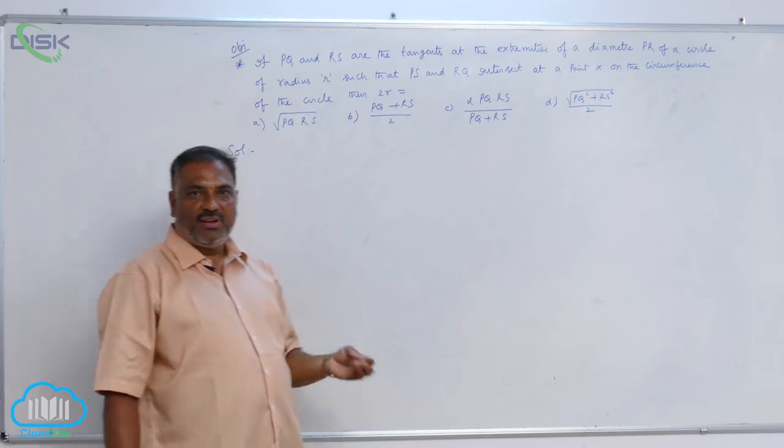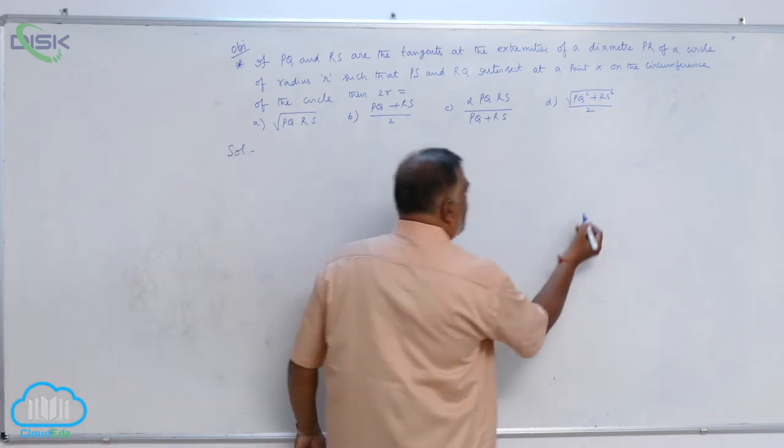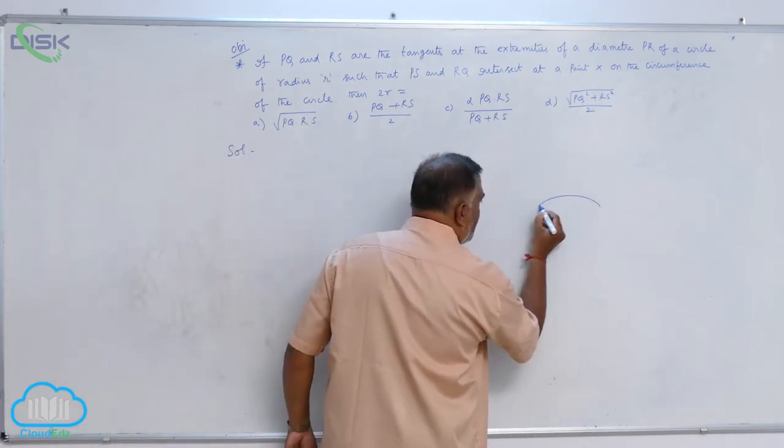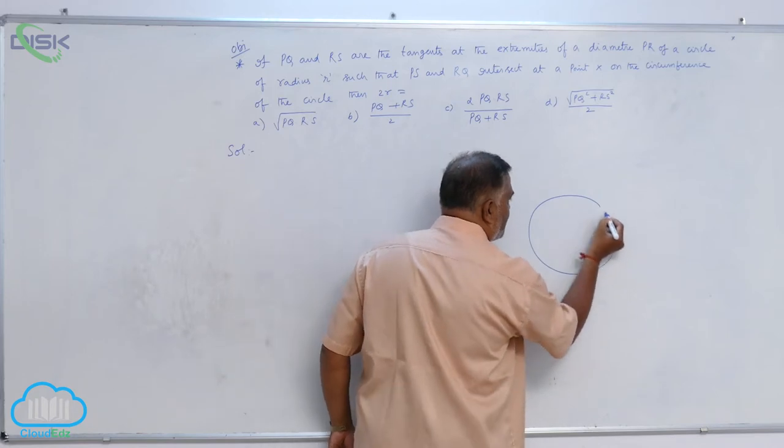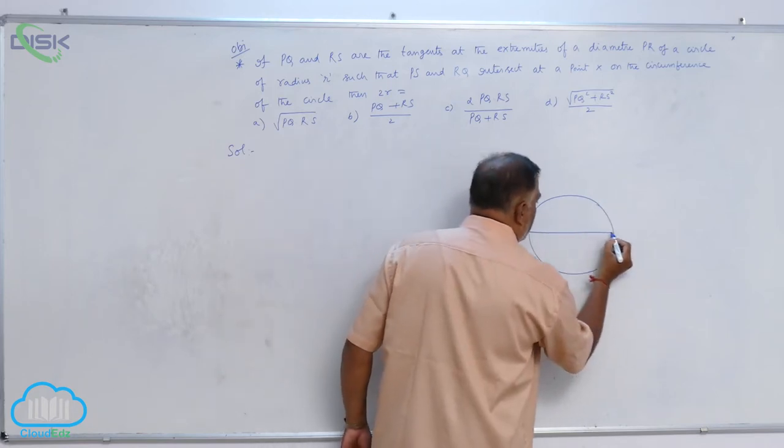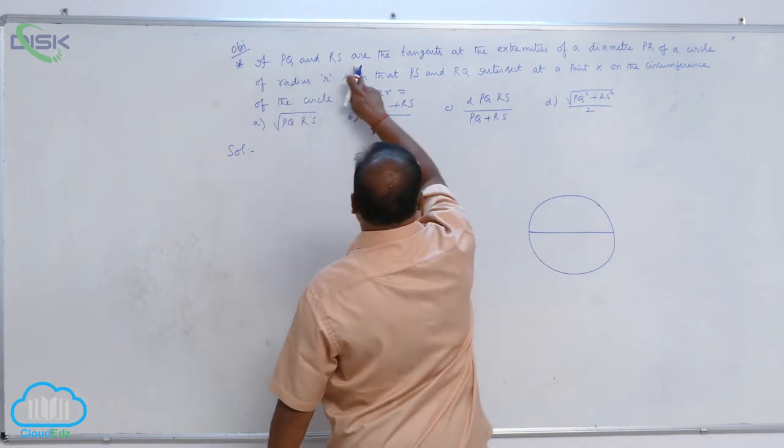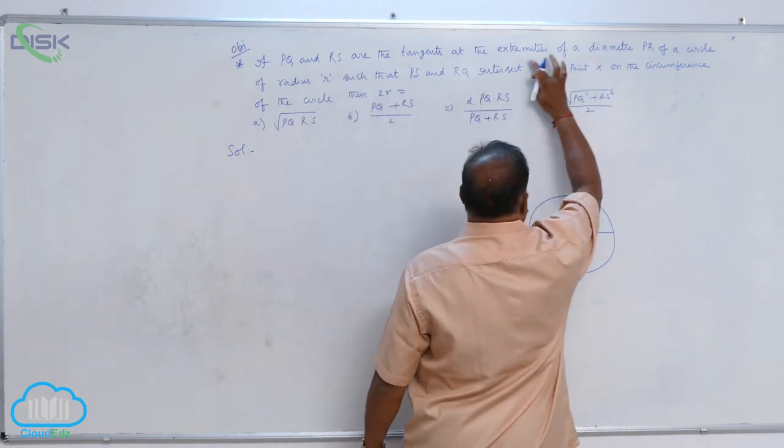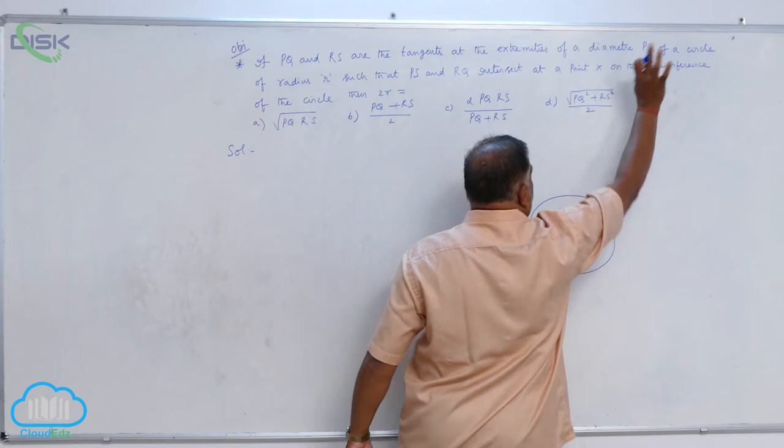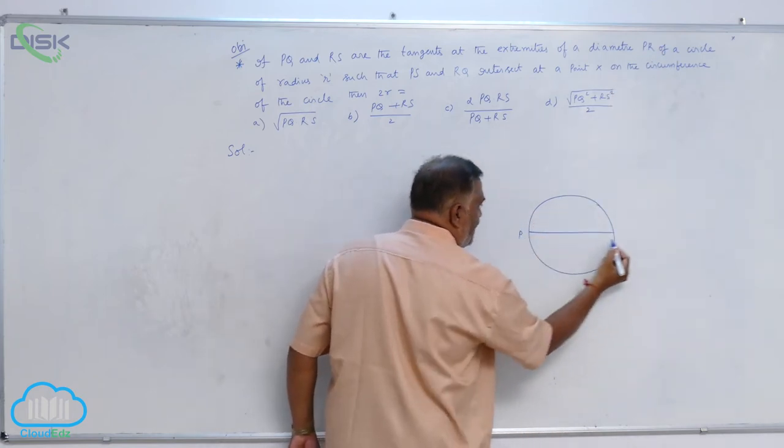Based on this information, let us draw a circle. You can see this is going to be the circle equation. Now, he says that PQ and RS are the tangents at the extremities of diameter PR. So, this is P, this is R.